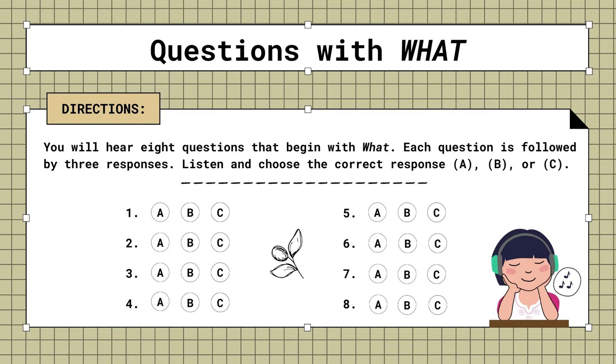3. What are you watching on TV? A. It's a new watch. B. An old movie. C. Is that the tree?